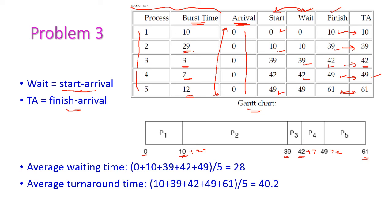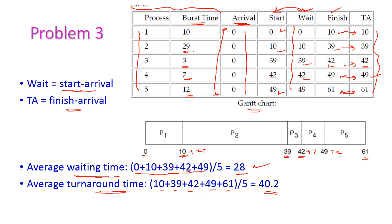When computing the average waiting time, 0 plus 10 plus 39 plus 42 plus 49 divided by 5 equals 28. And when computing the average turnaround time, 10 plus 39 plus 42 plus 49 plus 61 divided by 5 equals 40.2.